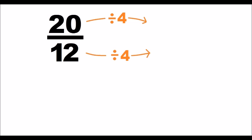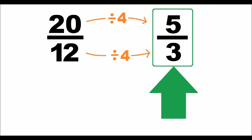Hello! The first step, we simplify by 4 the initial fraction. This is the fraction that we'll use to generate the mixed number.